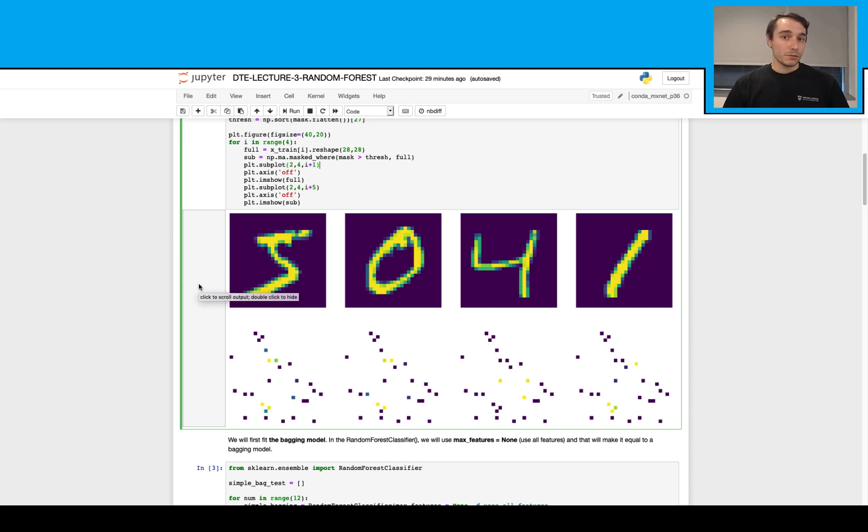When we compare this with a simple bagging model, in those models, every single decision tree will consider all the features. So it means that for those, they will see all these pixels. But for the random forest model, each single decision tree will see less number of pixels.